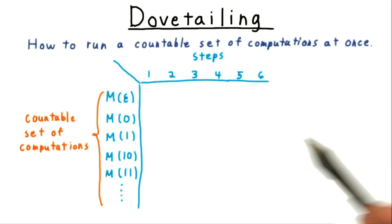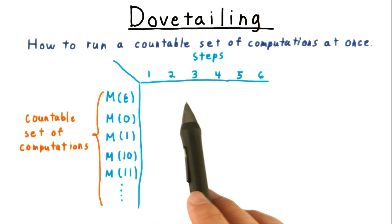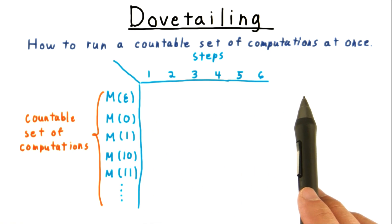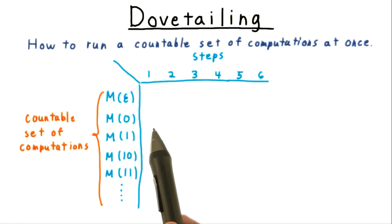Note that we can't just simulate M on the empty string first, or we might just keep going forever, filling out the first row and never getting to the second.